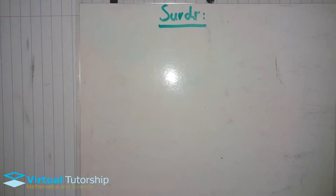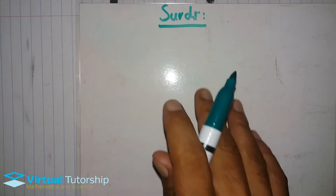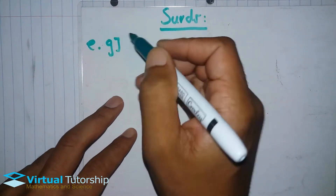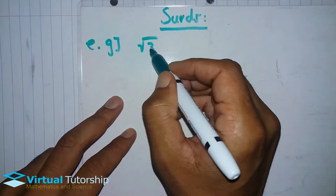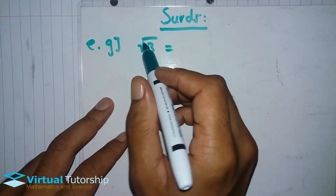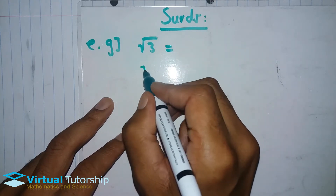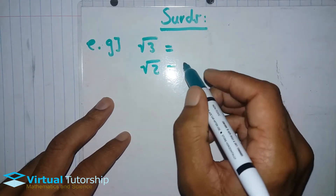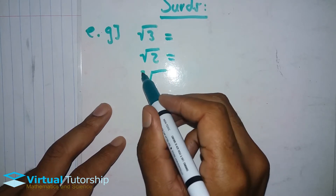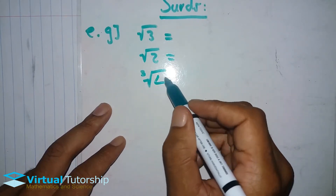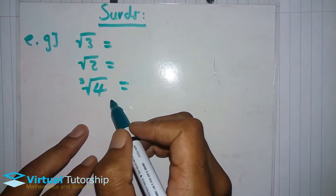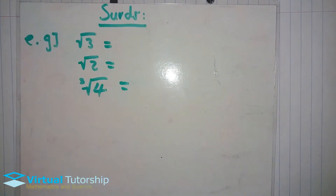I was talking about surds — my roots are a surd, like an irrational number. So let's say for instance the square root of three — I would totally not get a whole number. And the square root of two — I would totally not get a whole number. And the square root —